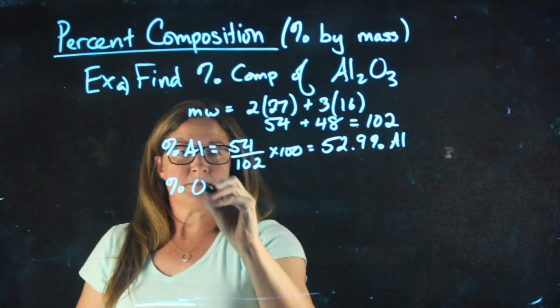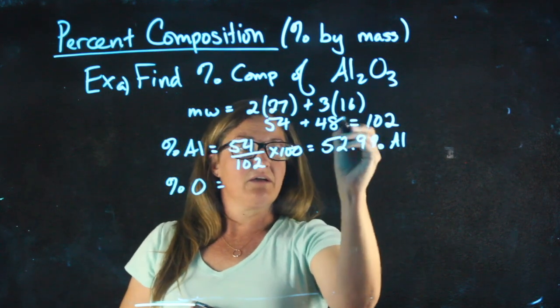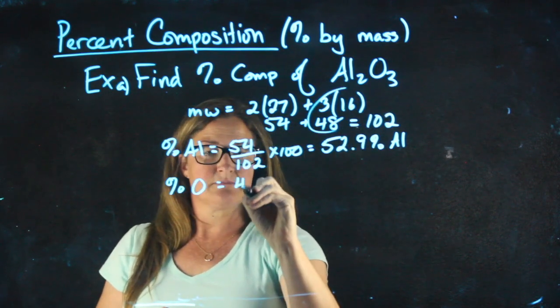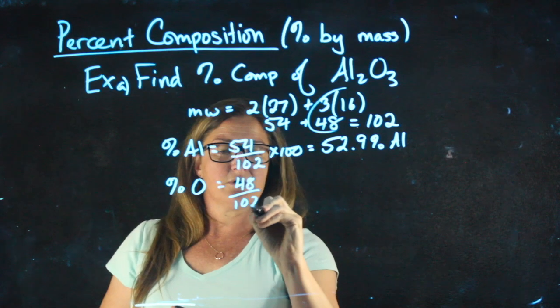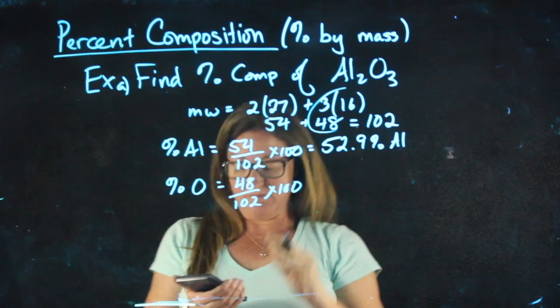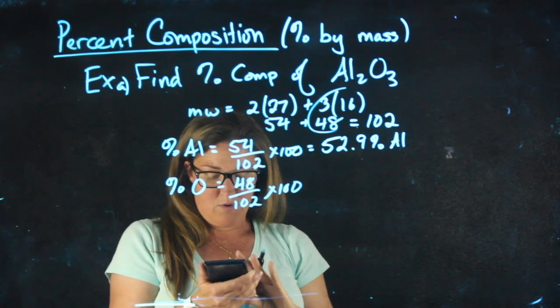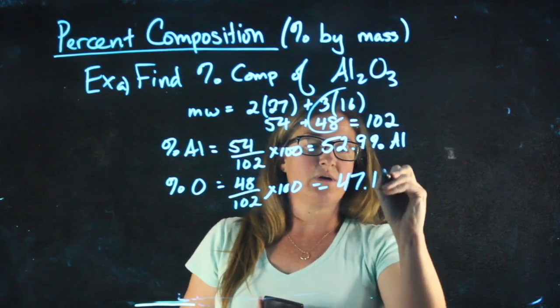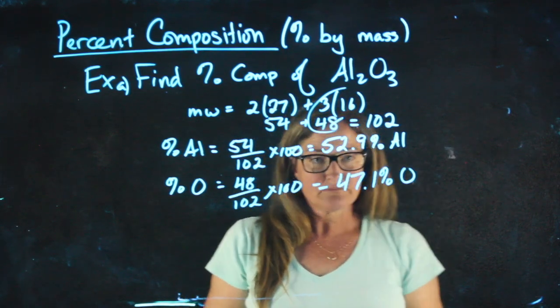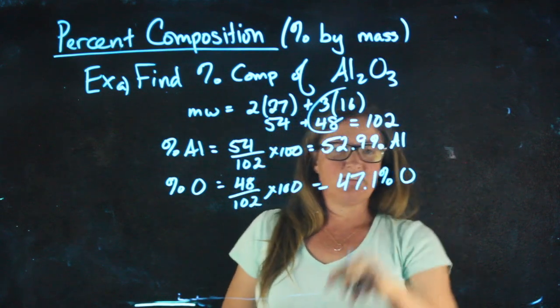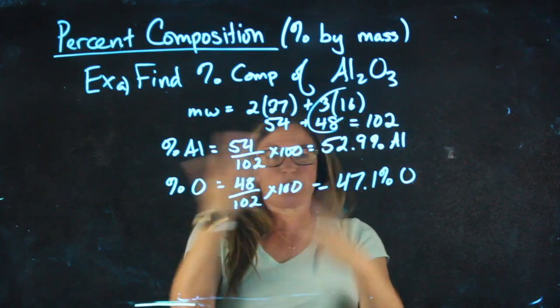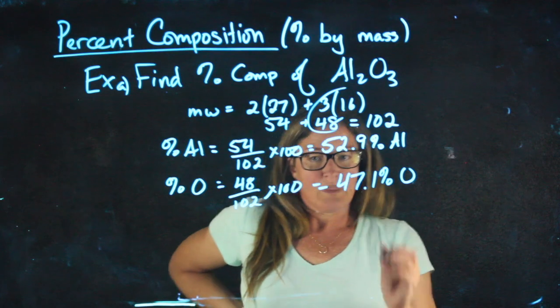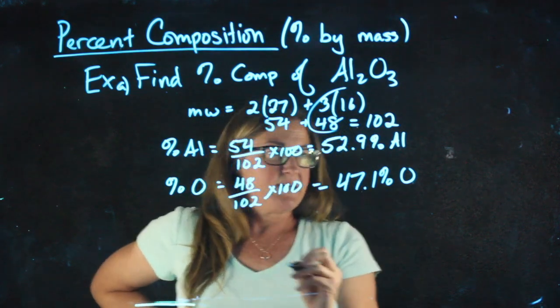The percent oxygen could be found by doing the weight of all of the oxygens over the total times 100. 48 divided by 102 times 100 gives me 47.1 percent oxygen. Notice that your percentage is allowed up to 100. If you have three elements, you do it the same way. You just have to do it three separate times.